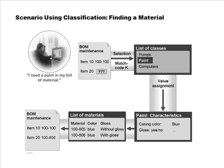This is the broad process of how classification works in SAP — very different from the normal way of searching. A material record doesn't inherently have attributes like color and gloss. You cannot keep adding fields to the material master every time you need something special, so the classification system allows you to flexibly add these kinds of characteristics.